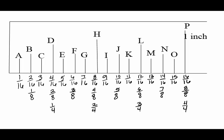The only fraction that needs to be reduced is 2/4ths. 2 and 4 can both be divided by 2, so 2/4ths reduces down to 1/2. And that is the fraction ruler.